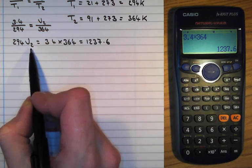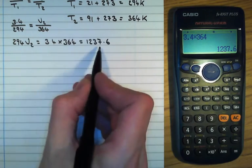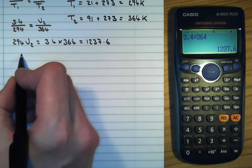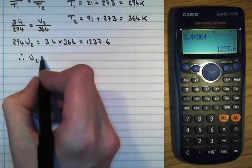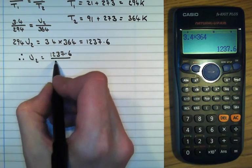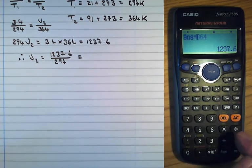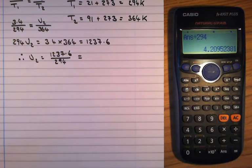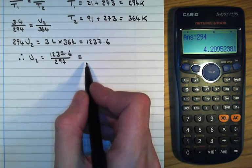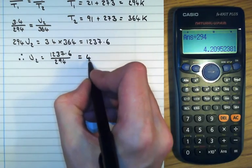So 294 V2 is equal to 1,237.6, and I want to find V2. So at this point, of course, I'll just divide both sides by 294. Therefore, V2 is equal to 1,237.6 divided by 294, and that gives us this. And of course, at this point, this is my final answer.